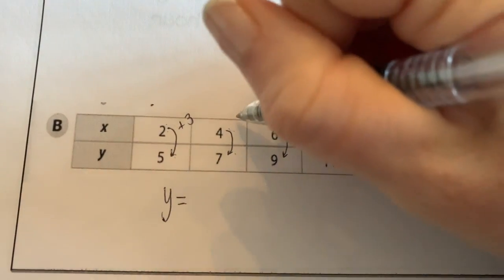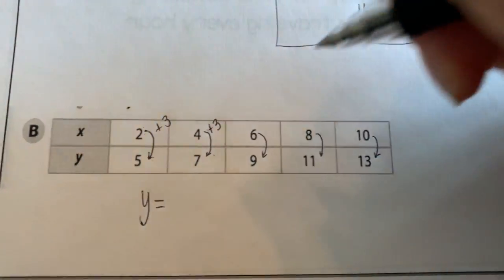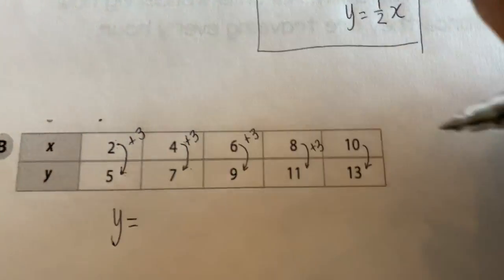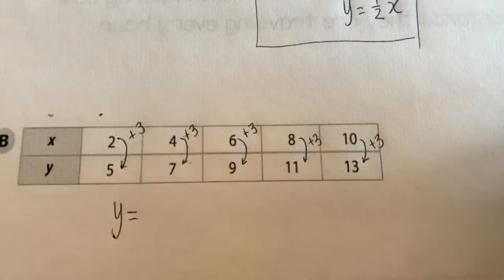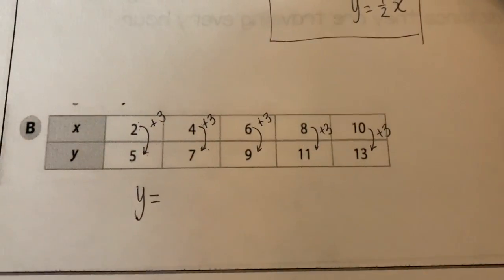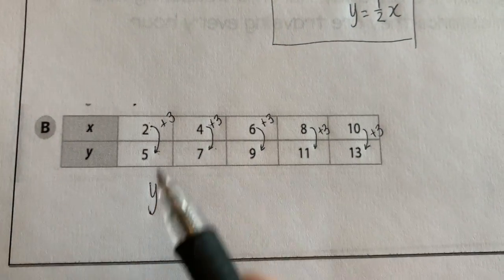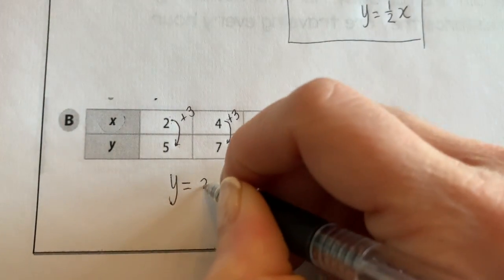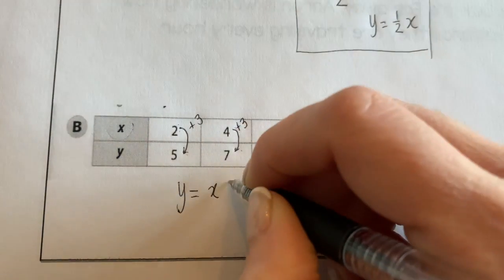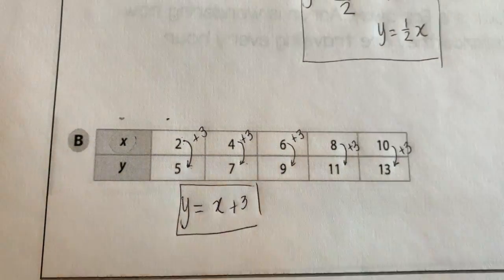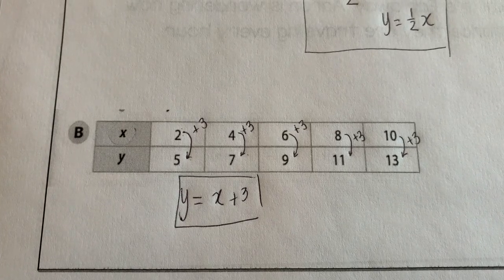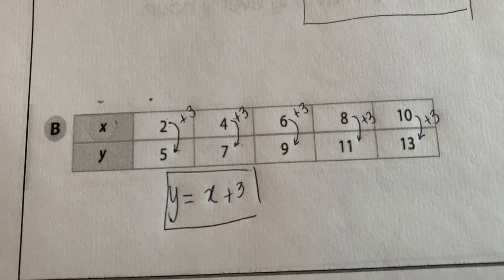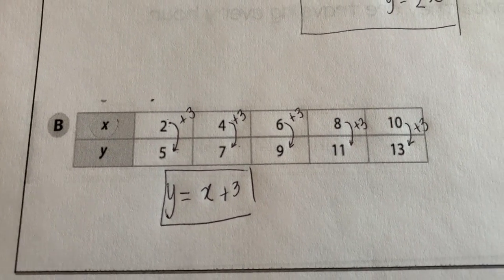Make sure you check your rule on all of the pairs. 2 plus 3 gives me 5. 4 plus 3 gives me 7. 6 plus 3 gives me 9. 8 plus 3 gives me 11. And 10 plus 3 gives me 13. So that's the right rule. Now you just have to translate it. To get y, I take my x and I add 3. That's my rule. If you wrote 3 plus x, you wouldn't be wrong, because addition is commutative. And that's it, guys. Nice and simple.